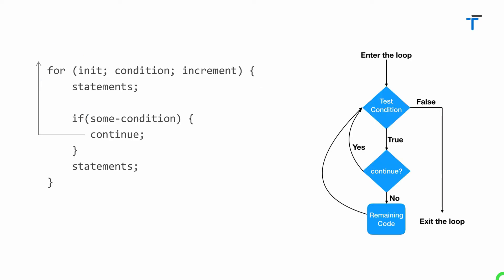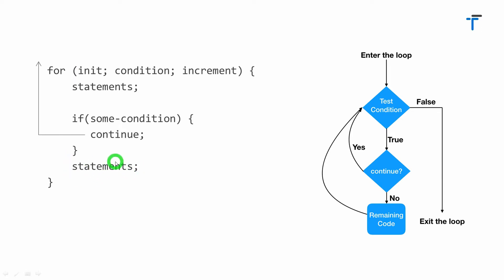Now I will talk about two questions: how continue works and why to use continue. We have a loop that executes repeatedly. When we place statements inside a loop, all of them execute again and again. But consider a situation where some condition occurs and you don't want to execute a particular part of the loop — in this case, the continue statement will help.